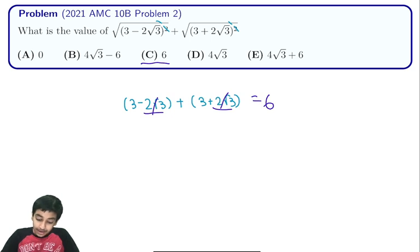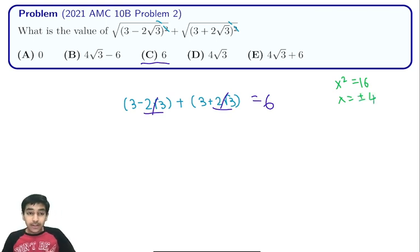But the correct way, the reason this is wrong is because the square root of a number cannot be negative. The square root of a number has to be positive. Even though you might think that the solutions to x² = 16 is x equals plus or minus 4, the square root is still defined as positive and it can never be negative.